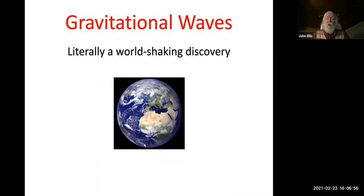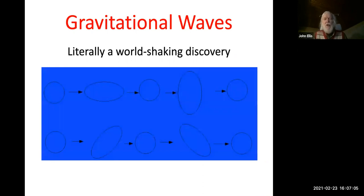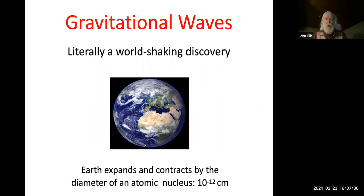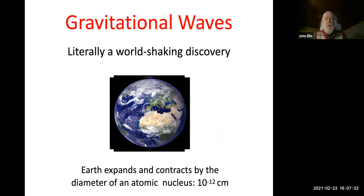Gravitational waves really are a world-shaking discovery, because they change the shape of the Earth between elliptical and circular and elliptical in the opposite direction. When they do this, the Earth expands and contracts by more or less the diameter of an atomic nucleus. Here I have a very sophisticated animation showing this phenomenon — as you can see, the world literally shakes.